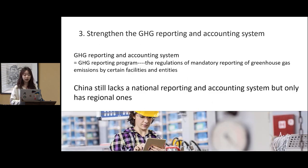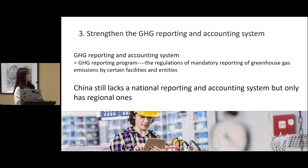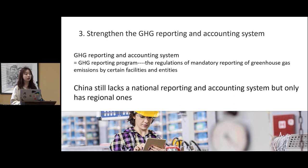Finally, China should establish a comprehensive GHG reporting and accounting system. This system would be equivalent to California's GHG reporting program, which mandates the reporting of greenhouse gas emissions by certain facilities and entities. Currently, China still lacks a national reporting and accounting system and only has regional ones in places like Shanghai and Shenzhen. It is urgent that China develop efficient accounting measures for key products and industries at the national level.